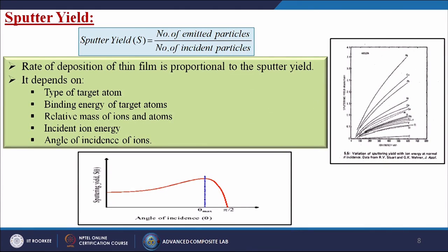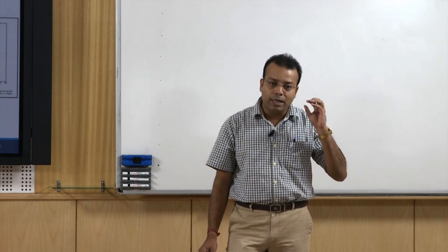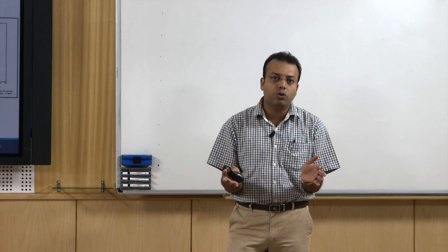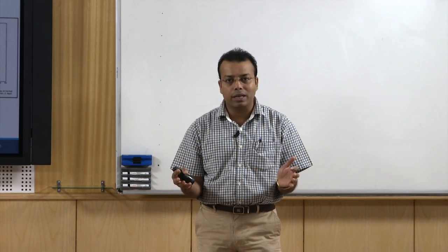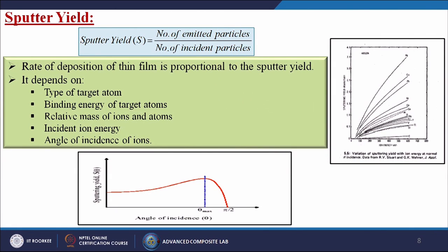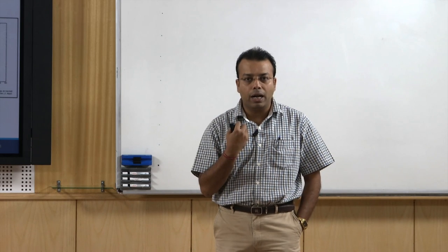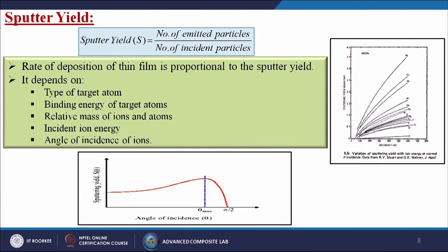Sputter yield is the number of emitted particles per number of incident particles — how many target atoms are released per argon atom used. If one argon atom releases 10 target atoms, the sputtering yield is 10, meaning we use less energy but get more results. The rate of deposition of thin film is proportional to sputter yield. It depends on: type of target atoms, binding energy of the target atoms, relative mass of ions and atoms, incident ion energy, and angle of incidence of ions.